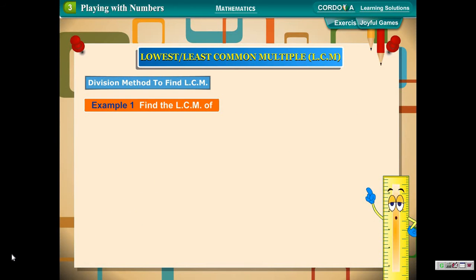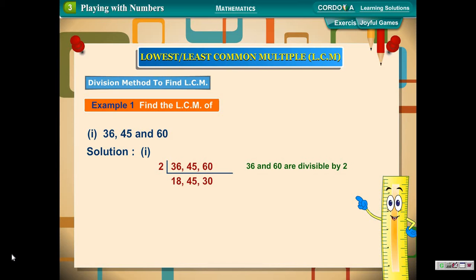Example 1: Find the LCM of 36, 45 and 60. Solution: 36 and 60 are divisible by 2. 18 and 30 are divisible by 2.